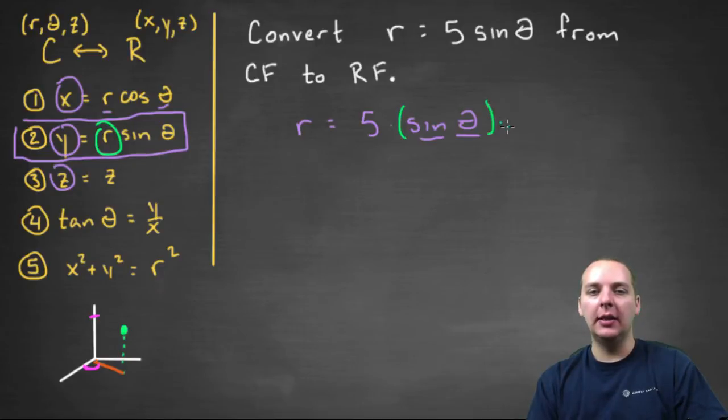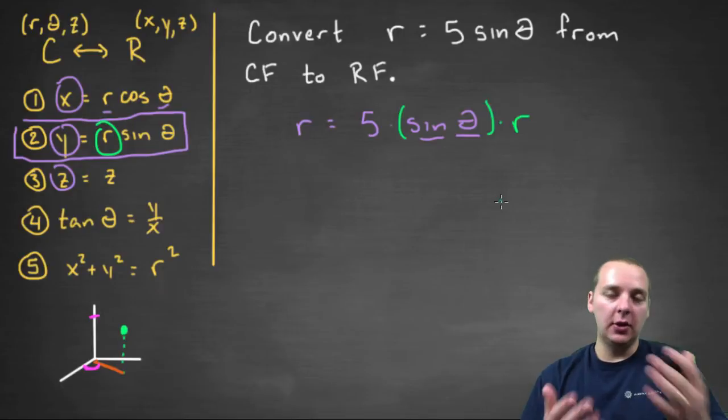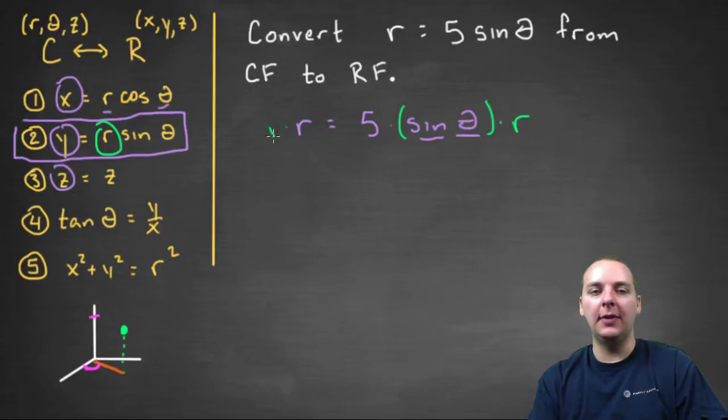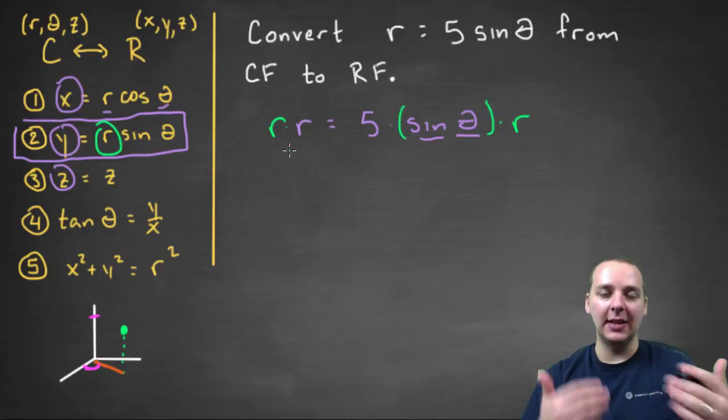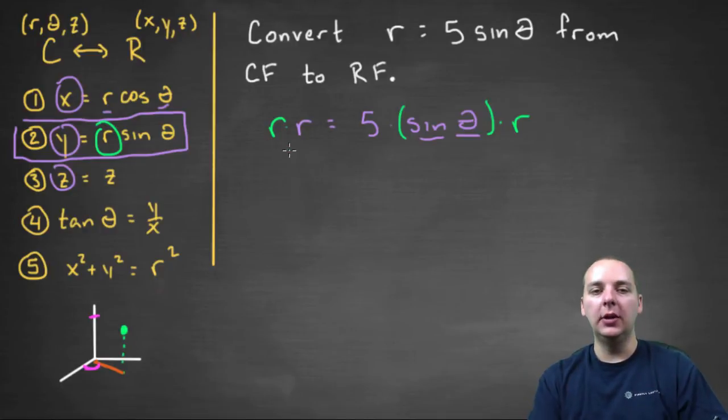So I'm going to multiply the right hand side by r, and to keep the equation balanced, I'm also going to multiply the left hand side by r, because that's allowed as long as you do it equally to both sides.